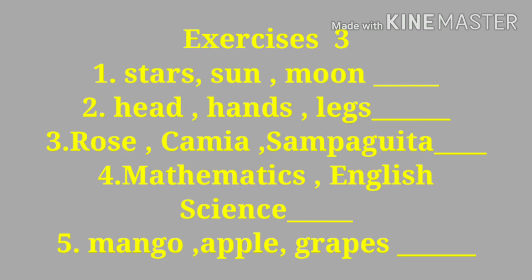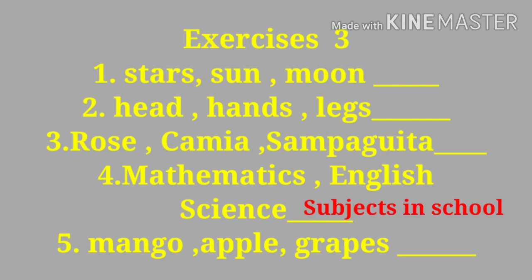Let us now move to number three: A. Rose, B. Camia, C. Sampaguita. What is the appropriate heading? 'Kinds of flowers' or 'different kinds of flowers.' Very good. Number four: A. Mathematics, B. English, C. Science. What is the appropriate heading? 'Subjects in school.' Very good.